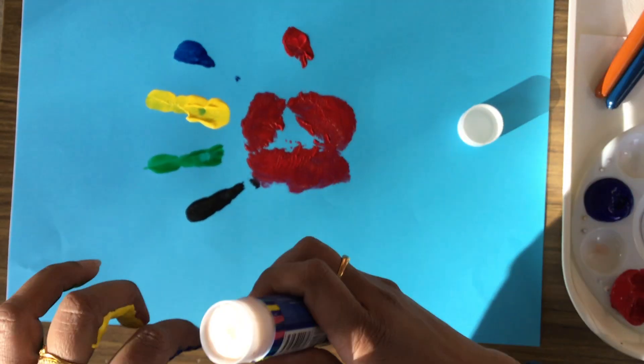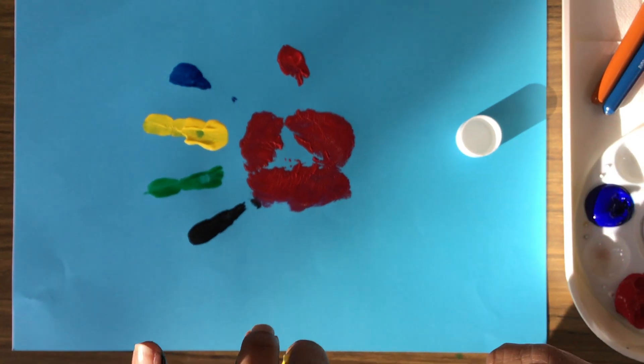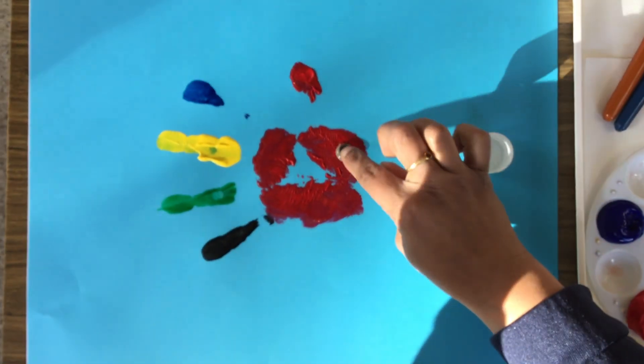And then get the glue stick, put some glue on the googly eye. You can paste it on the fish.